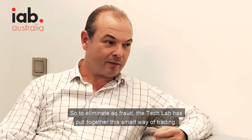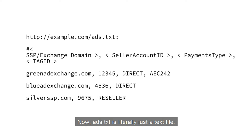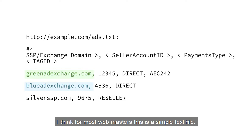To eliminate ad fraud, the Tech Lab has put together this smart way of trading. They've been in touch with all of the major tech vendors around the globe to put together a plan. Adstock TXT is literally just a text file, but what it describes inside it is a series of domains that can actually resell a publisher's inventory.